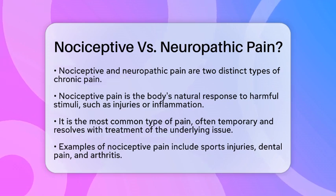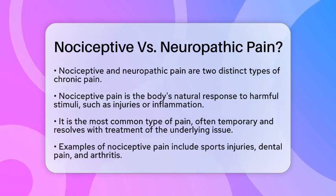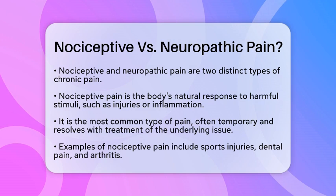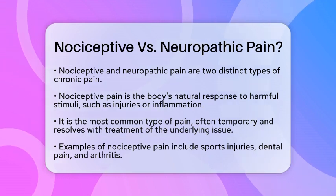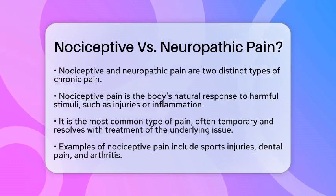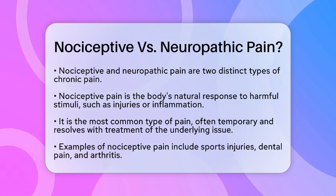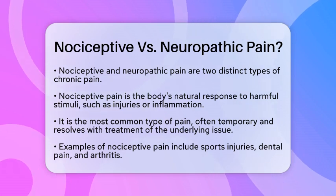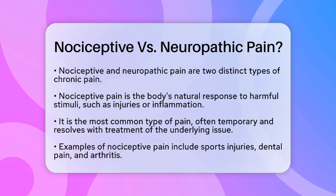Nociceptive pain is the body's natural response to harmful stimuli, such as injuries or inflammation. It is the most common type of pain people experience. When you stub your toe or have a sore back, that's nociceptive pain. It comes from specialized nerve endings called nociceptors that detect harmful stimuli. This type of pain is usually temporary and goes away once the underlying issue is treated.